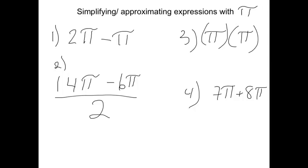When you have pies in an expression, you can treat them the same as you would treat a variable in that you would subtract or add the coefficients and keep the variable the same. In this case, you're keeping the pi the same. So if you had two pies and subtracted one pi, you would be left with pi.